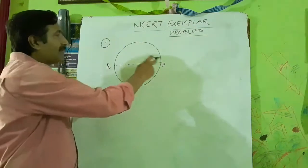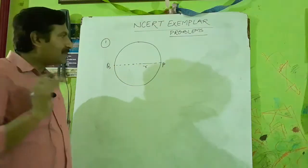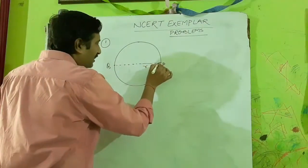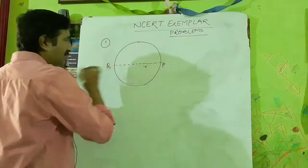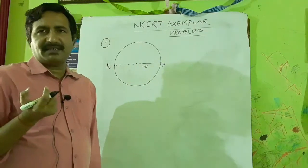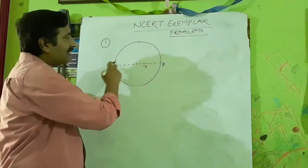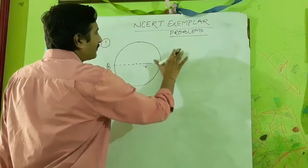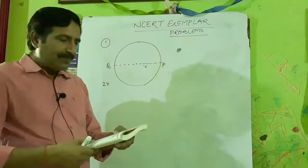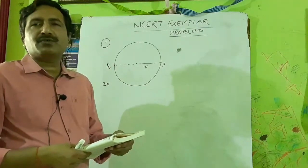The particle travels from P to Q to complete half the circle. Initial position is P and final position is Q. The minimum distance from initial to final position is called displacement. This is the diameter — whatever the length of the diameter, that will be the displacement. Diameter is double the radius, so displacement is 2R. The four options are: zero, πR, 2R, and 2πR.